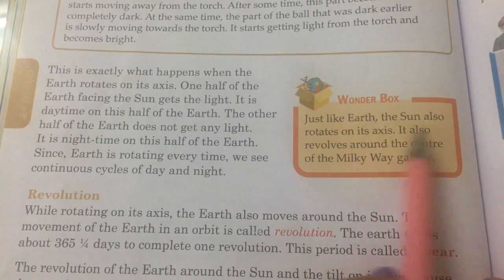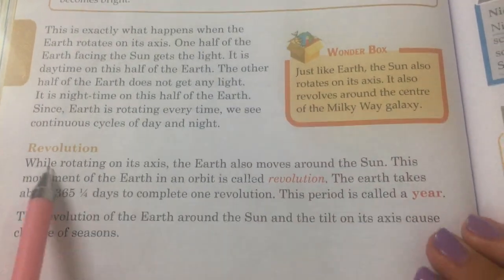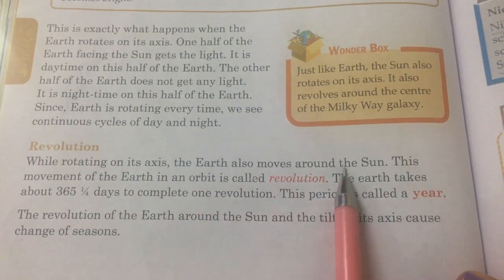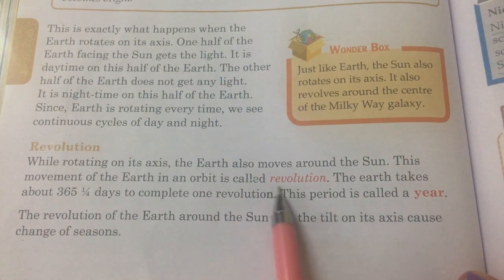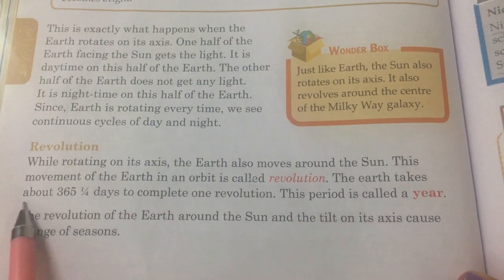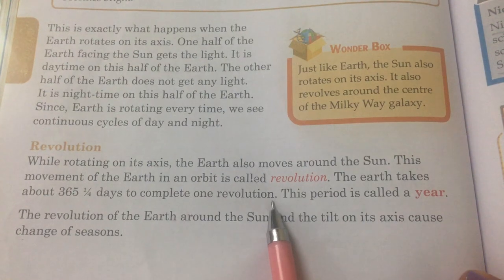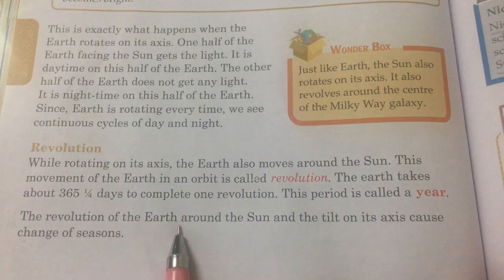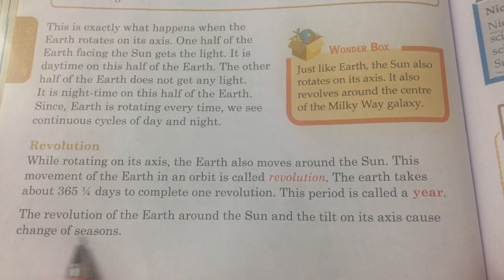Just like the earth, the sun also rotates on its axis and revolves around the center of the Milky Way galaxy. Revolution: By rotating on its axis, the earth also moves around the sun. This movement of the earth in an orbit is called revolution. The earth takes about 365 and a quarter days to complete one revolution. This period is called a year. The revolution of the earth around the sun and the tilt on its axis causes change of seasons.